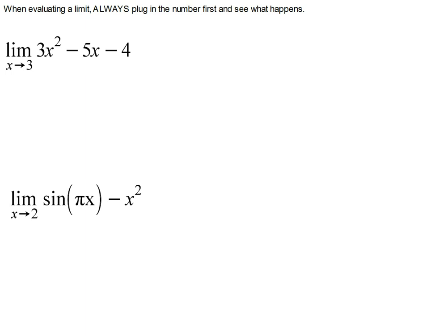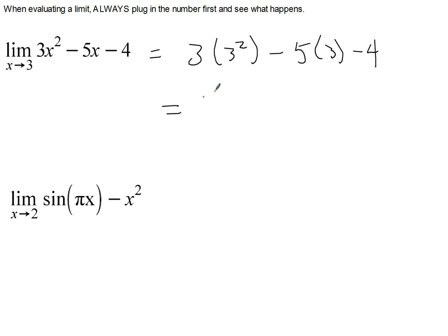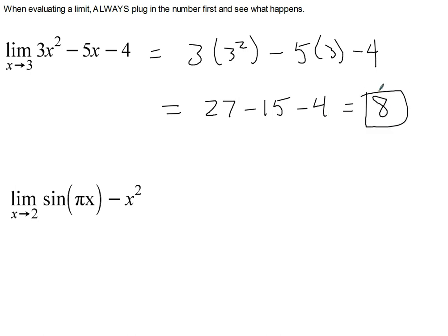When you evaluate limits, the first thing you'll always want to do is just plug in a number and see what happens. If you end up getting some other number, you're finished. Plug in x equals 3, you end up with 3 times 3 squared minus 5 times 3 minus 4, which is 3 times 9, or 27, minus 15, minus 4. 27 minus 15 is 12, minus 4 is 8, so your answer is 8.